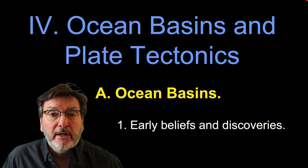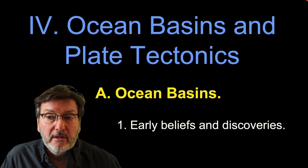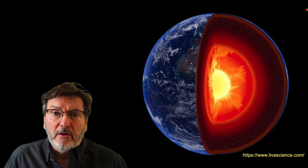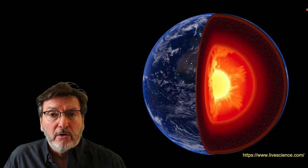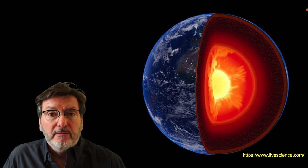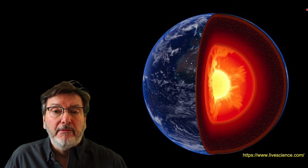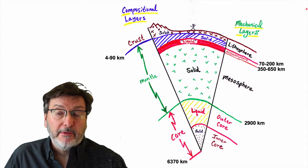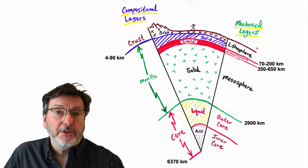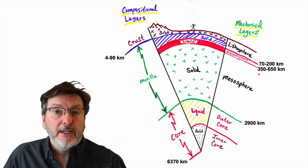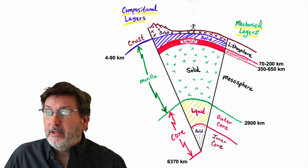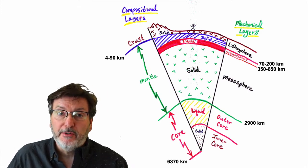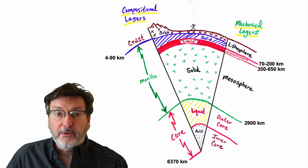We've been working through these series of discoveries of how the oceans work. So far we've focused on the Earth's large-scale structure — the importance of the outer core, the convecting mantle, and the rigid lithosphere and convecting underlying asthenosphere. This diagram is a very simplified cartoon of the structure of the Earth, discriminating the mechanical layers: lithosphere, asthenosphere, and then that placeholder mesosphere.